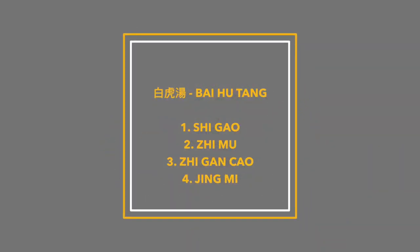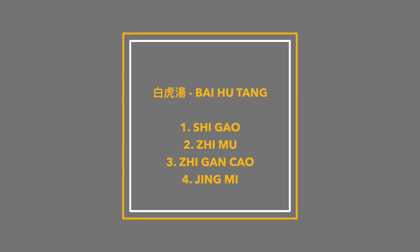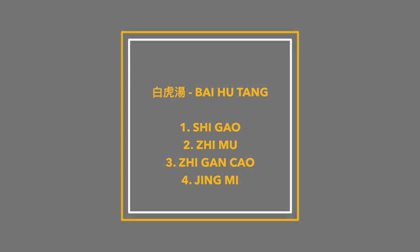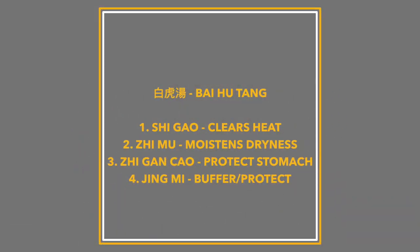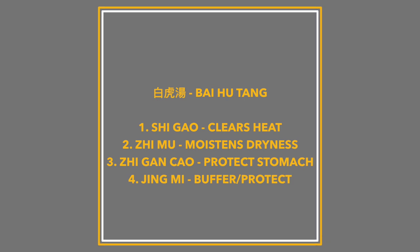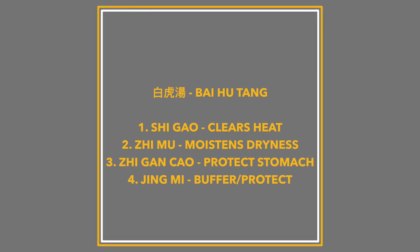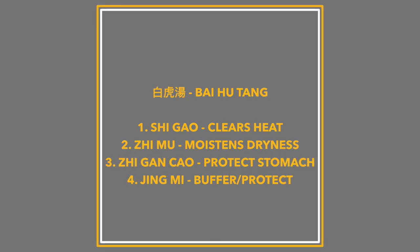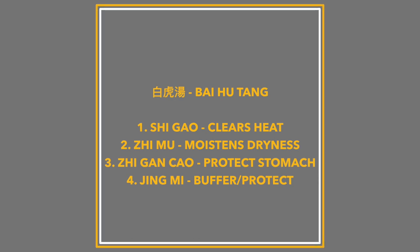For example, a formula called baihutang — White Tiger Decoction — is a simple formula of four ingredients: shigao (gypsum), zhi mu, zhi gan cao (dry-fried licorice), and jing mi (a type of rice). The shigao gypsum is used to clear heat from the person's body in a pattern where someone has a raging fever, a pounding pulse, sweating, and extreme thirst — a very serious condition. The zhi mu helps the gypsum clear the heat and also moistens the dryness in the body caused by the fever. The zhi gan cao and jing mi benefit and protect the stomach and fluids in the body, and they buffer the strong effect of the gypsum, which is used in a fairly high dose.